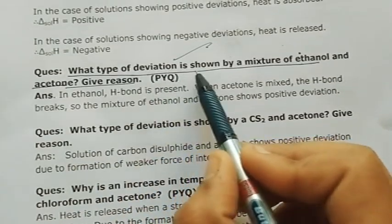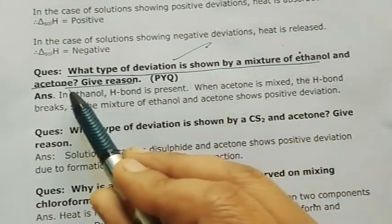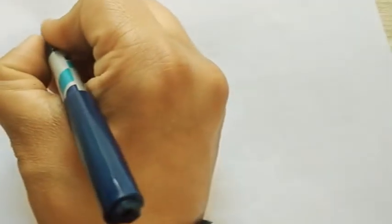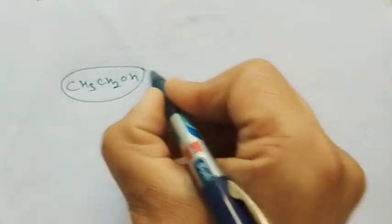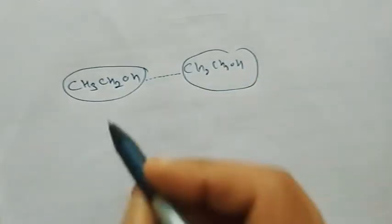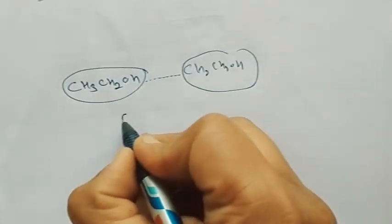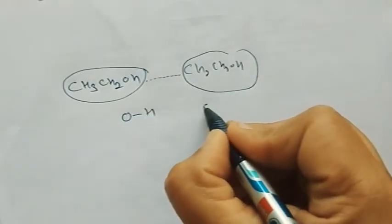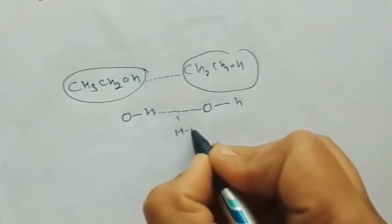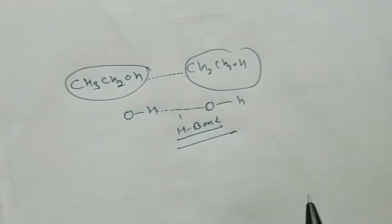First question: what type of deviation is shown by a mixture of ethanol and acetone? You should know that alcohols have H-bonds. Ethanol is CH3CH2OH — it has an OH group. Between one ethanol molecule and another, the O-H of one and the O-H of another form an H-bond. So alcohols have H-bonds.